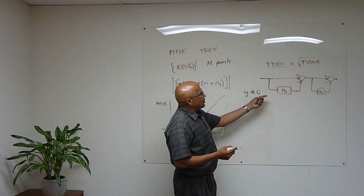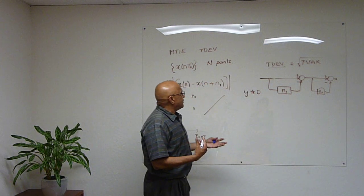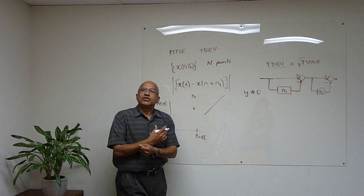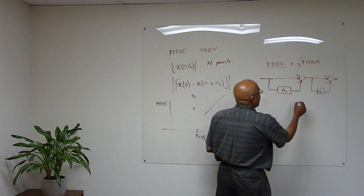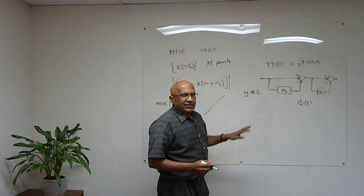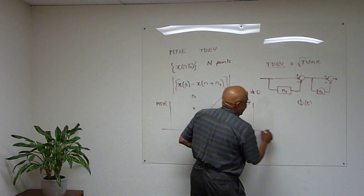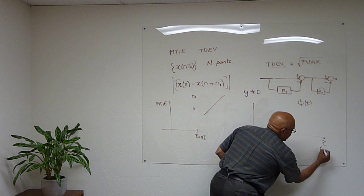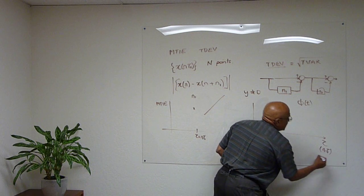This TDEV, square root of TVAR, is the variance by considering intervals of time N1. And it turns out that that kind of a metric gives you great insight into the kind of noise you are looking at. So if you look at phi of T, the noise, and you look at TDEV as a function of tau. Tau is, you know, think of it as N1 times T sub zero.